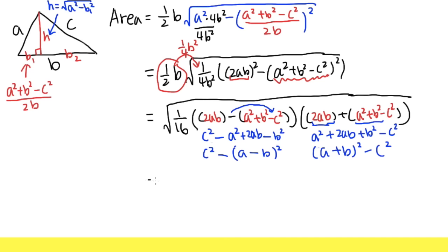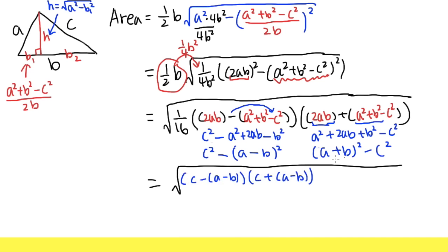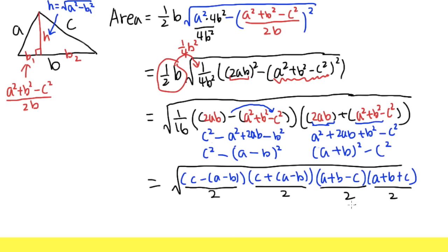Writing the square root again, we factor each part using difference of two squares: (C - (A-B))(C + (A-B)) and ((A+B) - C)((A+B) + C). We have four factors and 16 = 2⁴, so we distribute one factor of 2 into each term. Now let S = (A + B + C)/2, which we call the semi-perimeter, since A + B + C is the perimeter of the triangle.